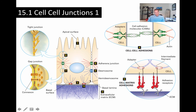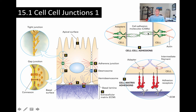Hemidesmosomes, number ten, are associations between the cell and a structure called the basal lamina. That structure serves as a boundary between an epithelial layer and connective tissue — we'll talk about it in a later video. They're also attached to the cytoskeleton, as you can see from these radiating filaments, with intermediate filaments attached via linker proteins to adhesion molecules. Those adhesion molecules are attached to proteins in the extracellular matrix. So all of these interactions are mediated by transmembrane proteins with a cytosolic region connecting to the cytoskeleton, and an extracellular region connecting either to the extracellular matrix in the case of a hemidesmosome, or to the adhesion molecule of an adjacent cell for cell-cell adhesions.